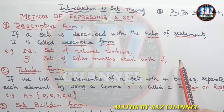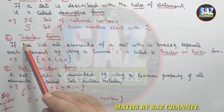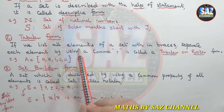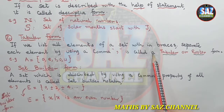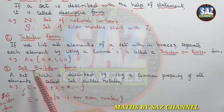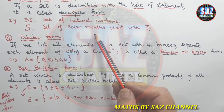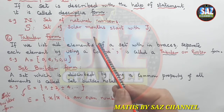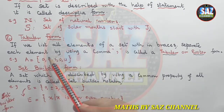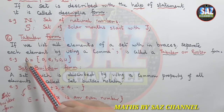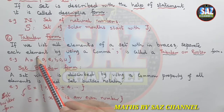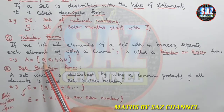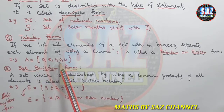The second method of writing a set is the tabular form. If we list the elements of a set within braces and separate each element by using a comma, that is called the tabular or roaster form. In the previous example, I described a set of vowels in the form of a sentence. If I want to write that set in tabular form, we must mark the set with a capital letter, use the flower bracket, and elements must be separated with a comma.